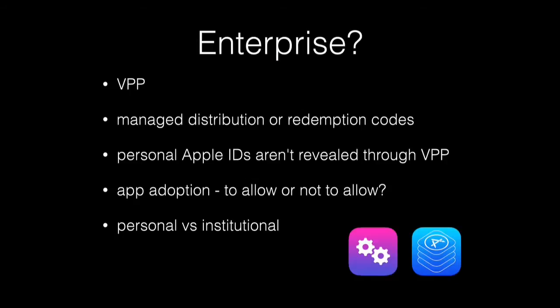What does this mean for the enterprise? A lot of it looks to be very much consumer-based, so there are challenges to how we integrate this into the organization. VPP is the big one — that's been in Australia for a while. The idea is that users are free to use their personal Apple ID for apps provided by their institution, and it's 50% off for education, which is a great incentive. There are two kinds of VPP: managed distribution and redemption codes. Redemption codes are consumable — something you give to the user and don't get back.